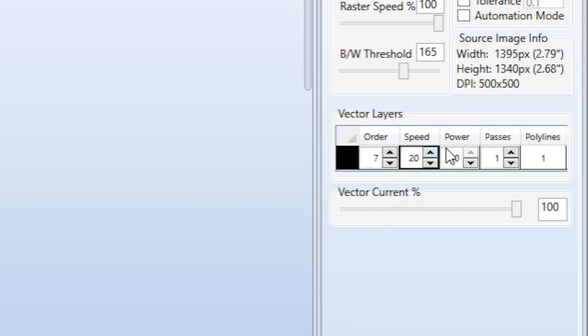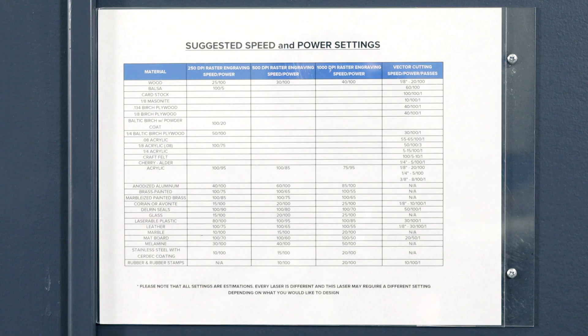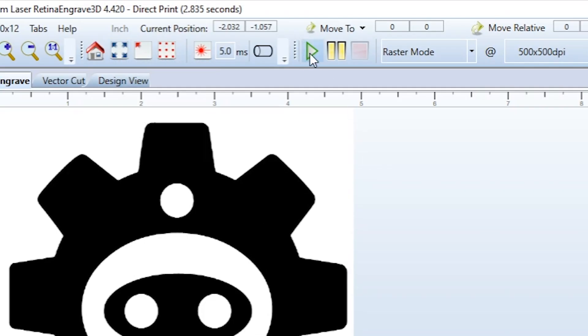Enter the appropriate speed and power settings for the material you're working with, based upon the chart recommendations. Hit the play button to start your print.